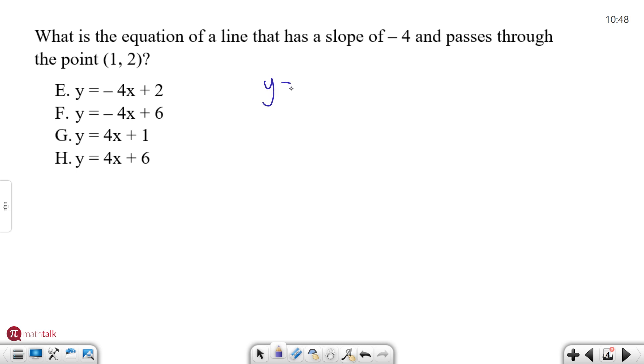So slope intercept is y = mx + b where m is your slope. So the nice thing about this problem here is that they tell us what the slope is. They tell us slope is -4 and so we can actually already eliminate two of our answer choices because the slope is not -4. This can't be it, this can't be it because the slope in that equation is positive 4. So already we've cut our answer choices in half and makes it easier for us to find a solution.